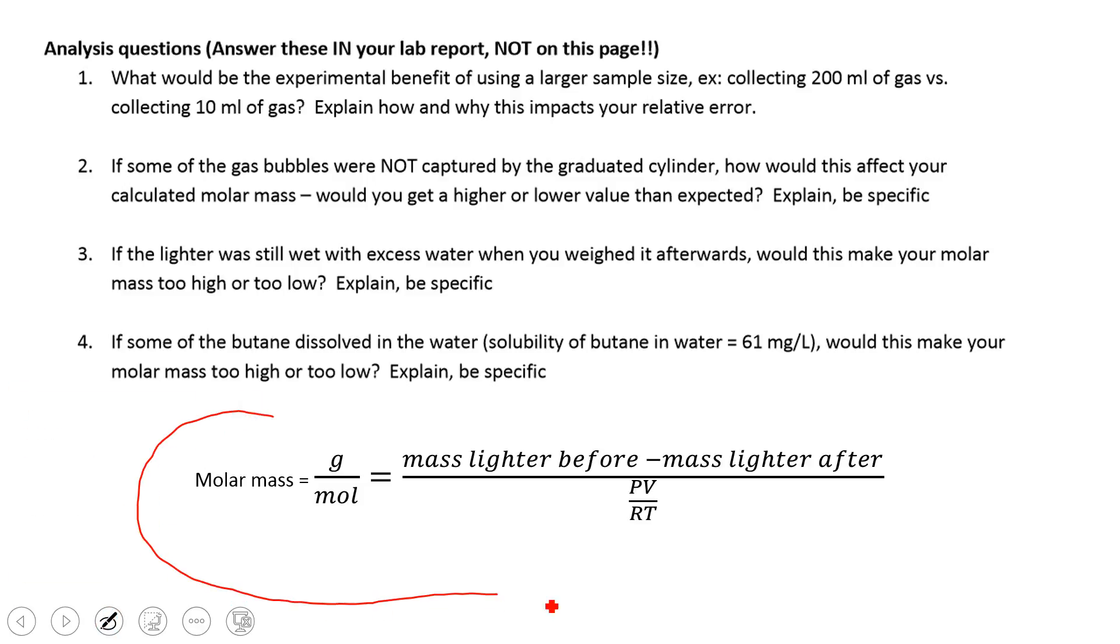So you want to think about the big picture and what you're calculating. So down here at the bottom, I basically summarized the whole calculation that we did into one equation here. So we're trying to find the molar mass of a gas, which is the grams per mole. The way that we found the mass of our gas is to take the mass of the lighter before and subtract the mass of the lighter afterwards.